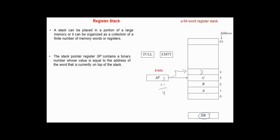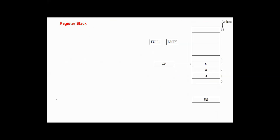The data register holds the binary data to be written into or read out of the stack. According to this structure, the highest value the stack pointer can hold is six ones, which is equivalent to 63 in decimal.